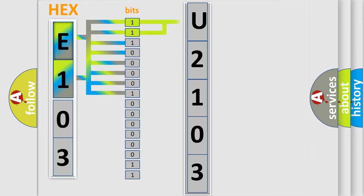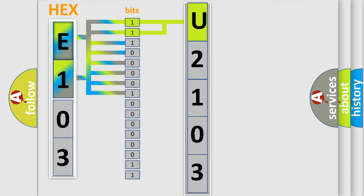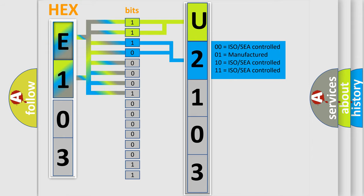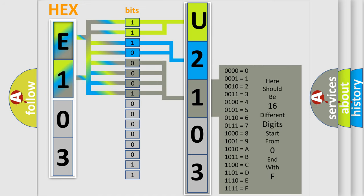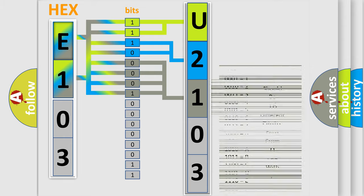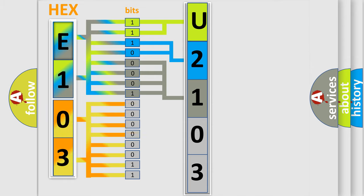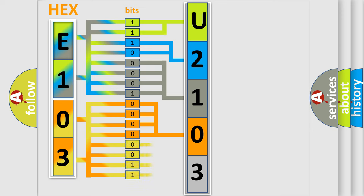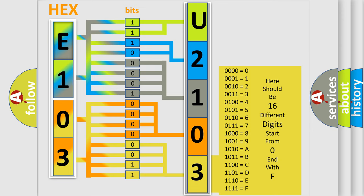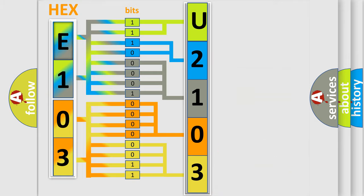By combining the first two bits, the basic character of the error code is expressed. The next two bits determine the second character. The last four bits of the first byte define the third character of the code. The second byte is composed of a combination of eight bits: the first four bits determine the fourth character, and the last four bits define the fifth character. A single byte conceals 256 possible combinations.